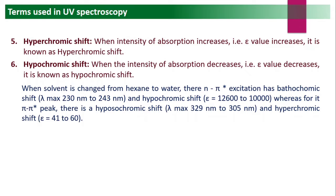When the solvent is changed from hexane to water, n→π* excitations show a bathochromic shift — lambda max changes from 230 nm to 243 nm — and a hypochromic shift with epsilon decreasing from 12600 to 10000. For π→π* transitions, there is a hypsochromic shift — lambda max decreases from 329 to 305 nm — and a hyperchromic shift with epsilon increasing from 43 to 60.